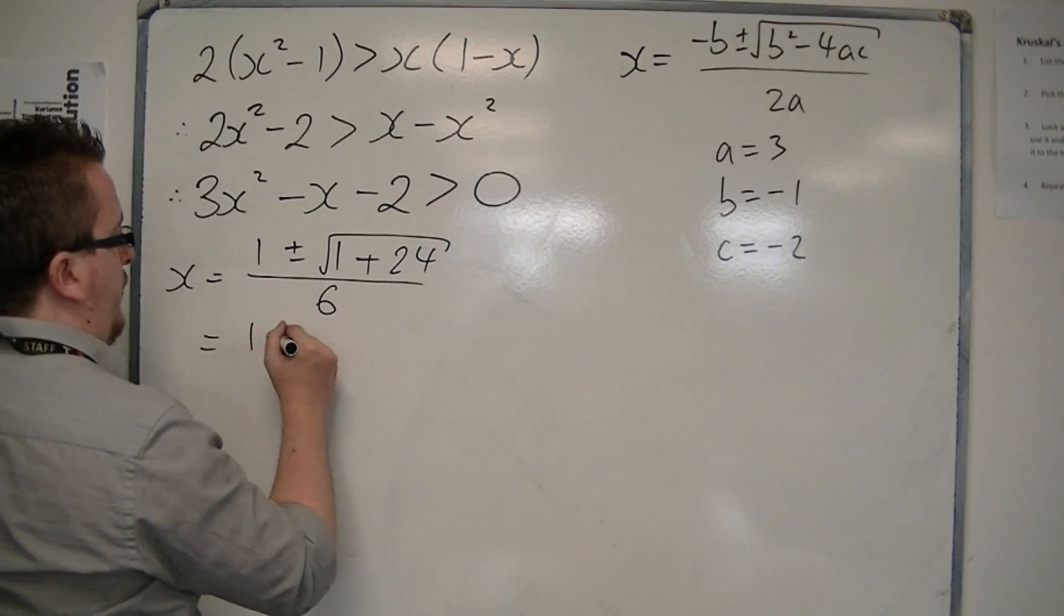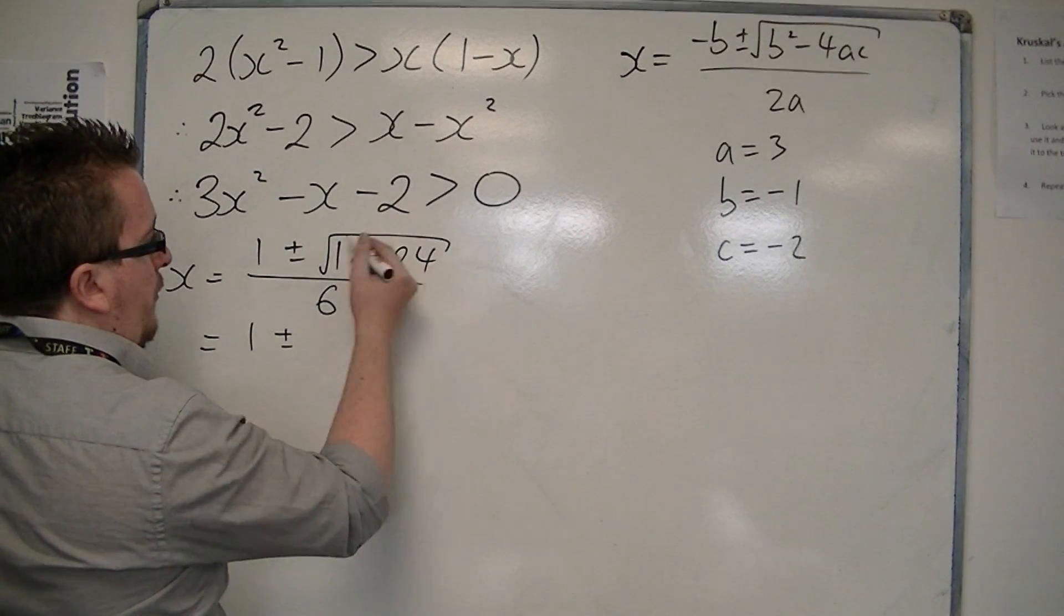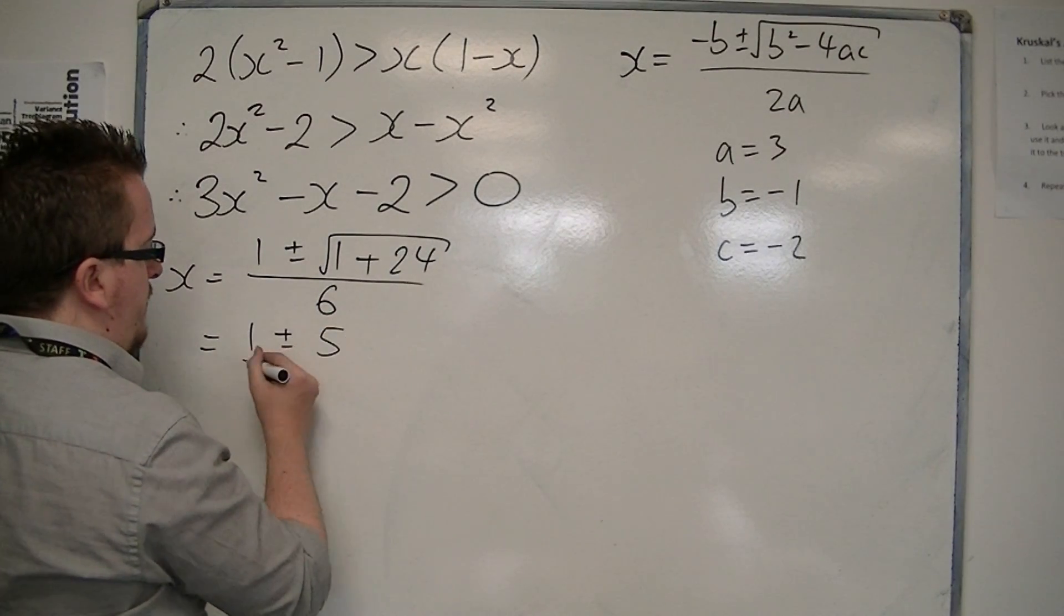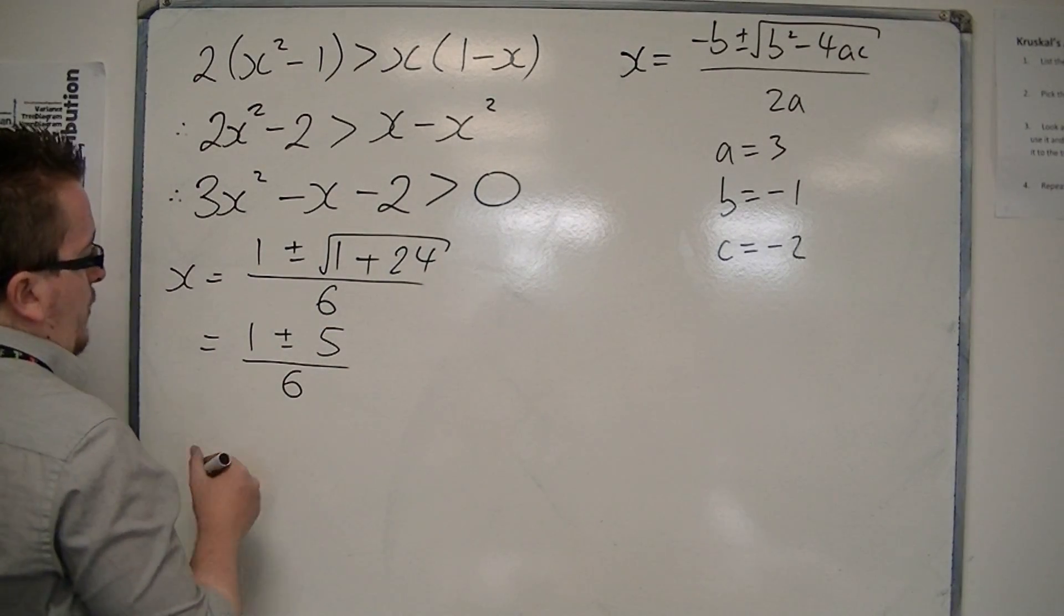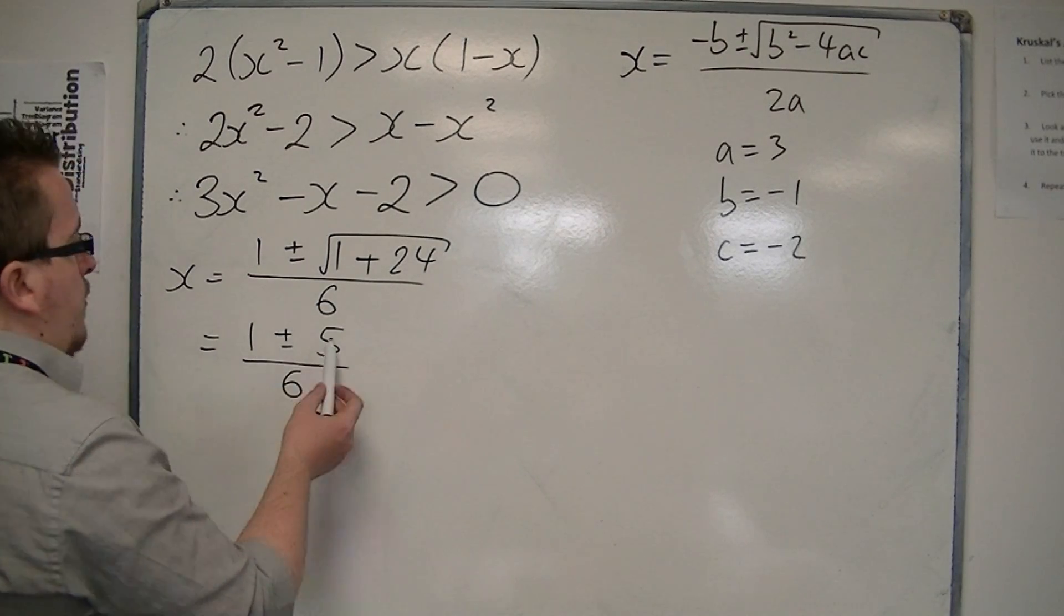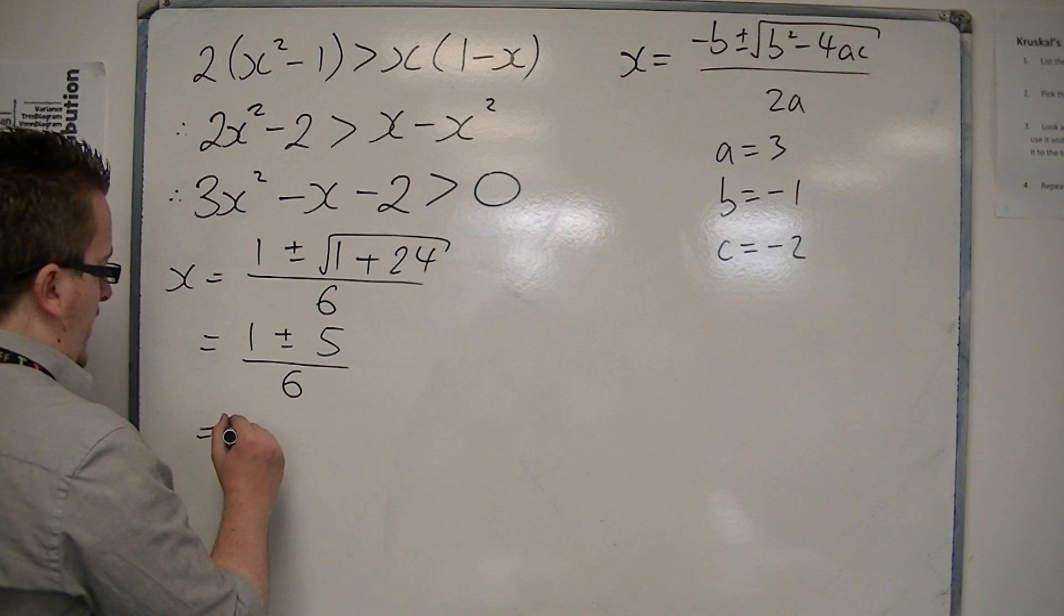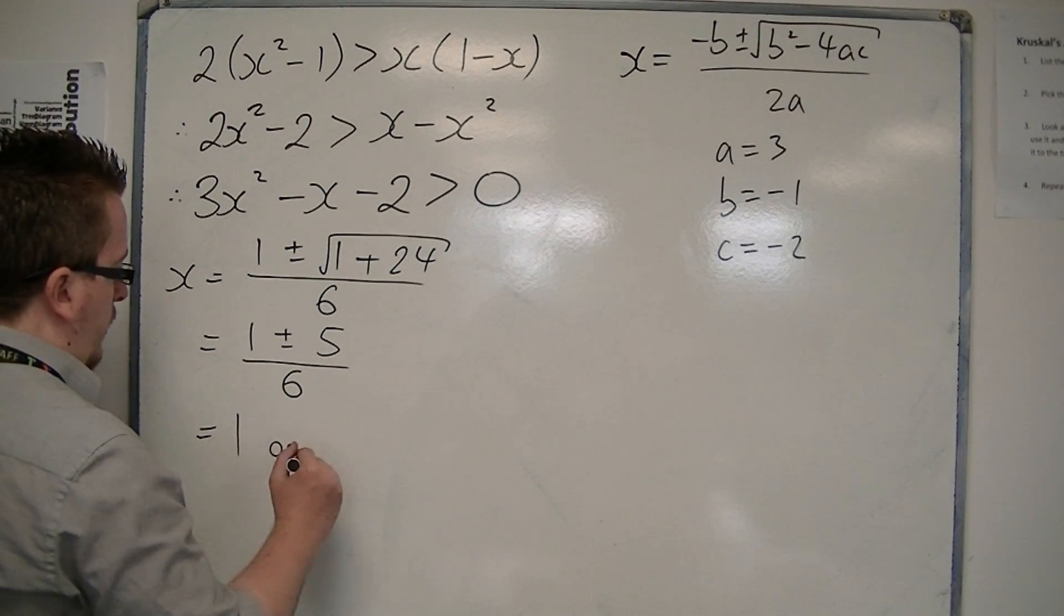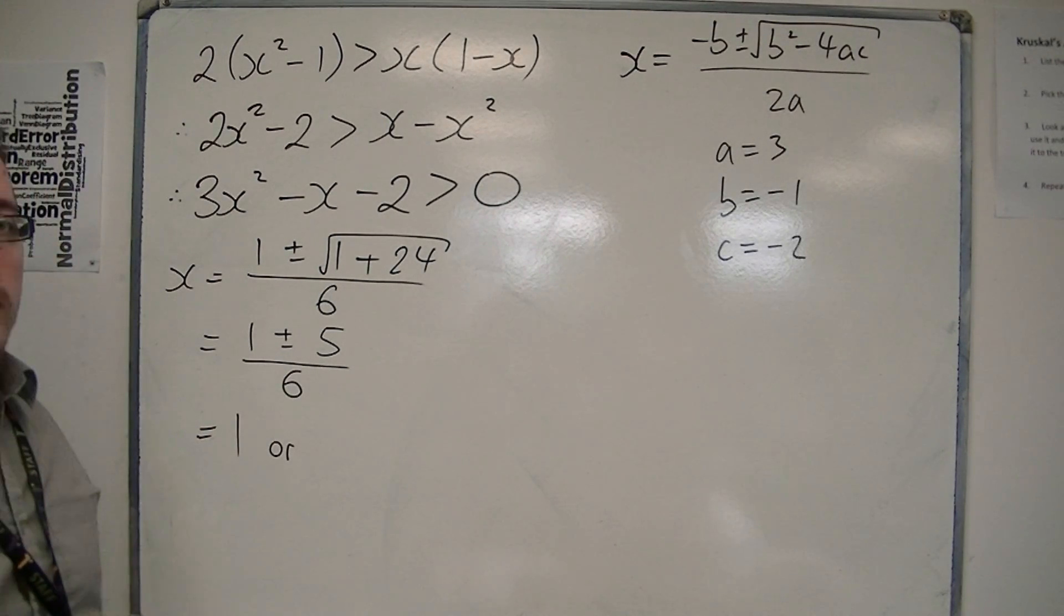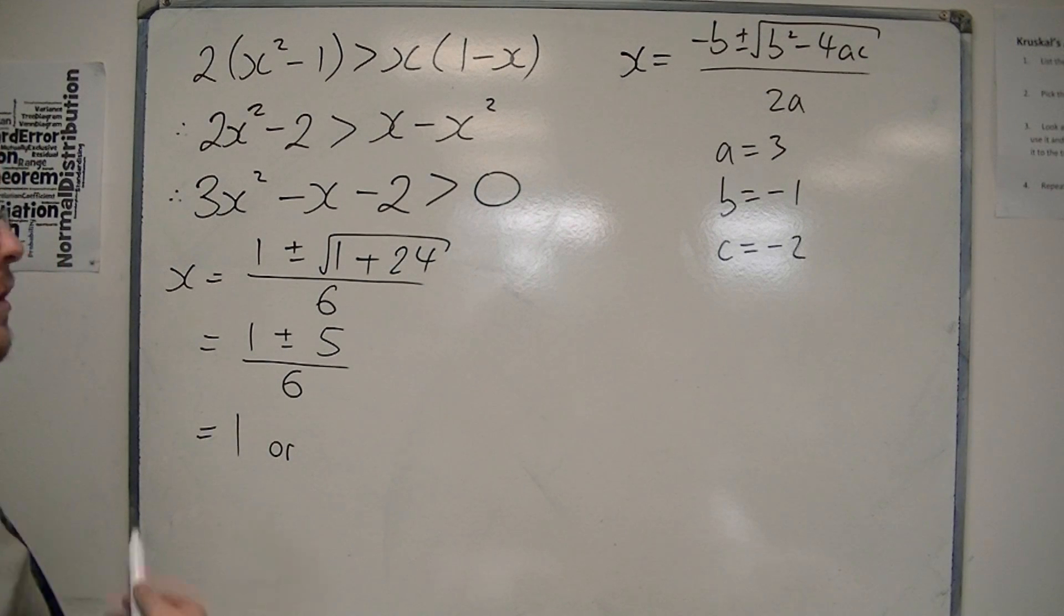So we've got 1 ± √25, which is 5, all over 6. We either get (1+5)/6 = 6/6 = 1, or (1-5)/6 = -4/6 = -2/3.